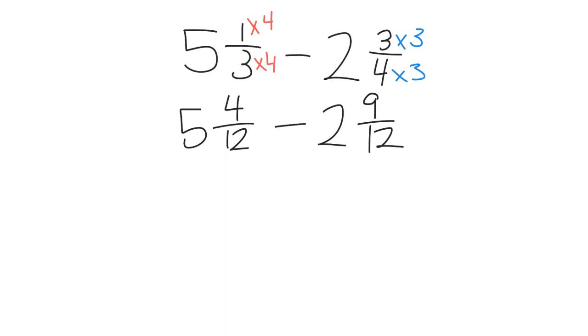So we're going to begin by subtracting the 2, so 5 minus 2 is 3, so that gives us 3 and 4 twelfths, and we still have to subtract our 9 twelfths, right?